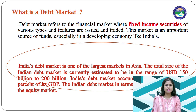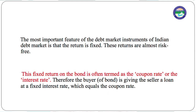The debt market is one of the largest markets in Asia. The total size of the Indian debt market is currently estimated to be in the range of 115 billion dollars to 200-500 billion dollars. India's debt market accounts for approximately 30 percent of its GDP. The most important feature of the debt market instrument is that the return is fixed and almost risk-free. This fixed return on the bond is often termed as the coupon rate or the interest rate. Therefore, the buyers of bonds are giving the seller a loan at a fixed interest rate equal to the coupon rate.